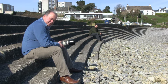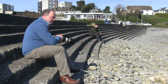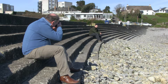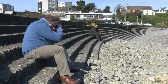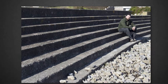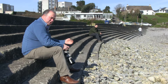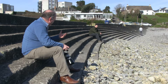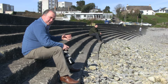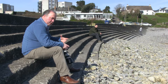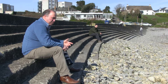We're using our videographer Sam as a model, and we're going to take a quick picture using those lines to draw us in to Sam's position. As we can see on the back of the camera, it brings us through to Sam's location. We're also placing Sam using the rule of thirds, so we can combine these composition rules in multiple ways.